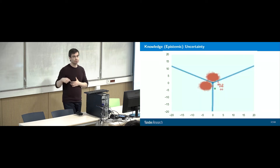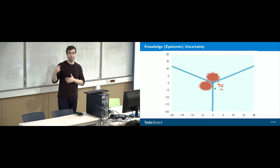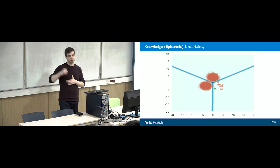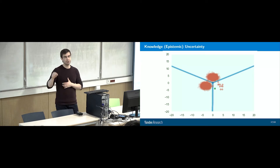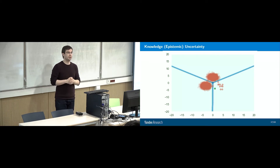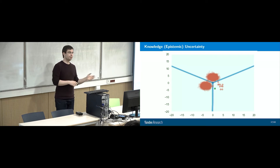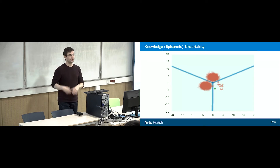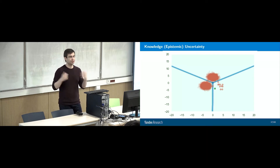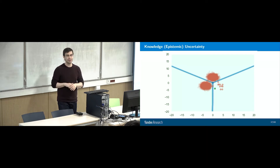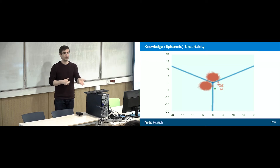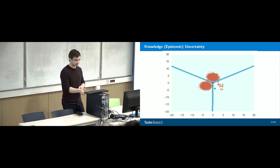A less extreme version is when we have inputs in a sparse region covered by training data. For example, we may see penguins on snow, but we don't see penguins on beaches in Argentina because we don't have that data. Whenever we see penguins on sand, our models go crazy.